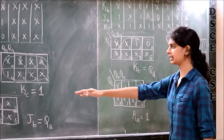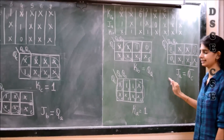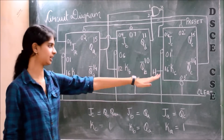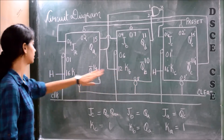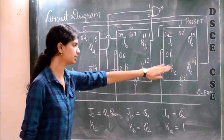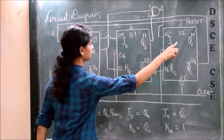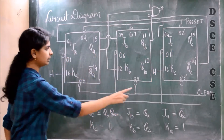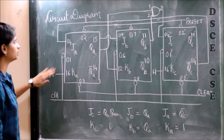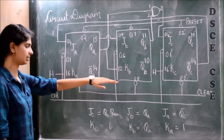Now we have the values of JC, KC, JB, KB, and JA/KA. Let us draw the circuit diagram. Here we have 3 stages of flip-flops. First we connect clock pins 1 and 6 of the first IC to clock. Pin numbers 2 and 7 go to preset and pin numbers 3 and 8 go to clear. Now let us connect JA, JB, KB, and JA/KA.